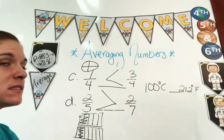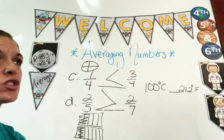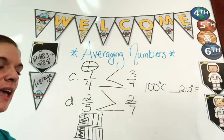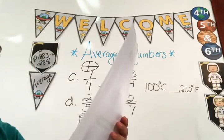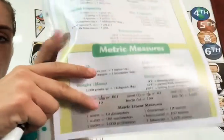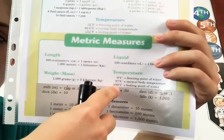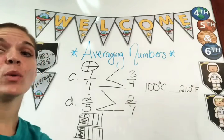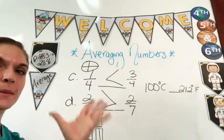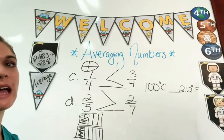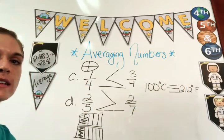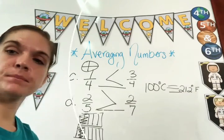Over here you have 100 degrees Celsius and 212 degrees Fahrenheit — which one is bigger, or are they equal? You can use your conversion sheet. 100 degrees Celsius is the boiling point of water, and 212 degrees Fahrenheit is also the boiling point of water. So they are equal — it's when the water starts getting bubbles, ready for spaghetti or other things. 100 degrees Celsius equals 212 degrees Fahrenheit.